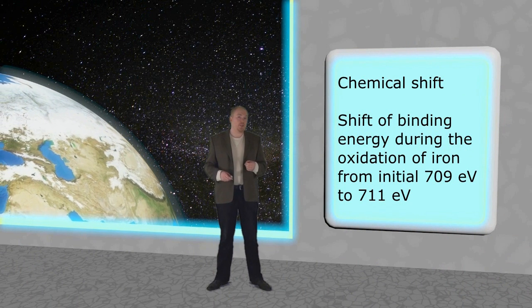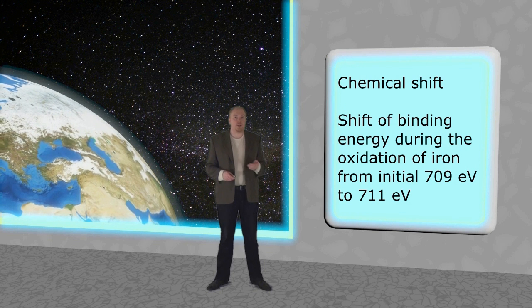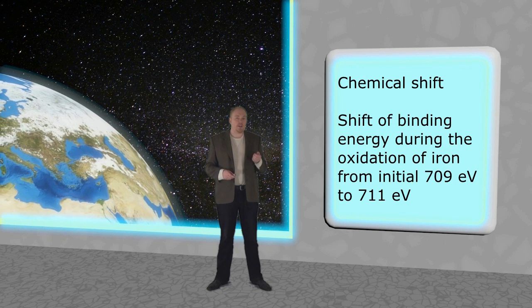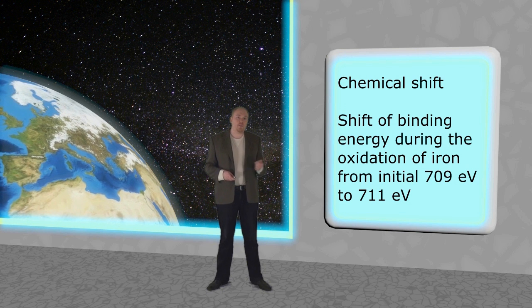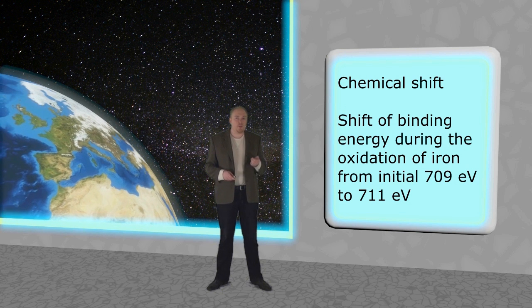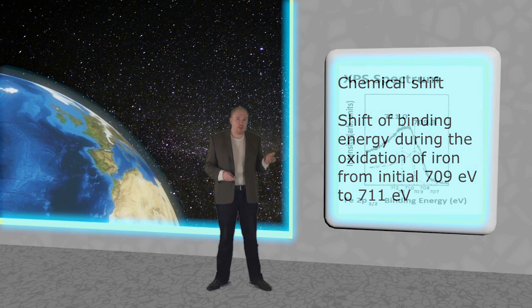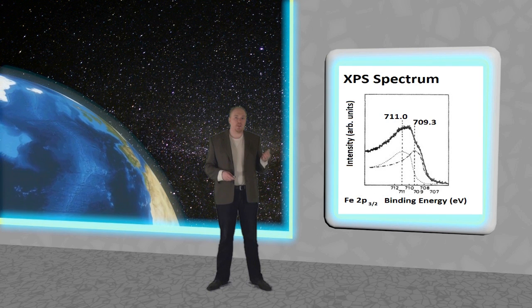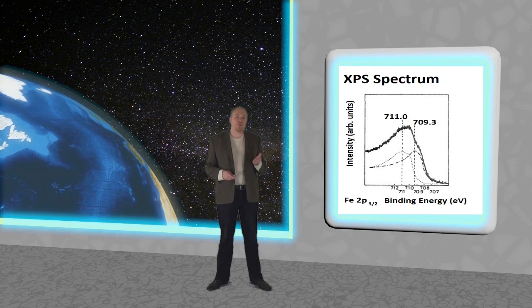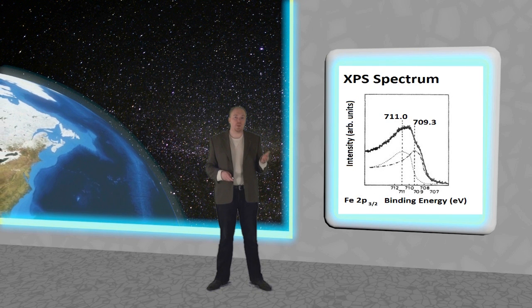XPS is actually so sensitive that it can even tell the difference between oxidized and unoxidized states, as the internal electrons' binding energy is slightly higher for oxidized electrons. For example, during the oxidation of iron, the binding energy moves from the initial 709 eV to 711 eV, which is a difference that we can measure.